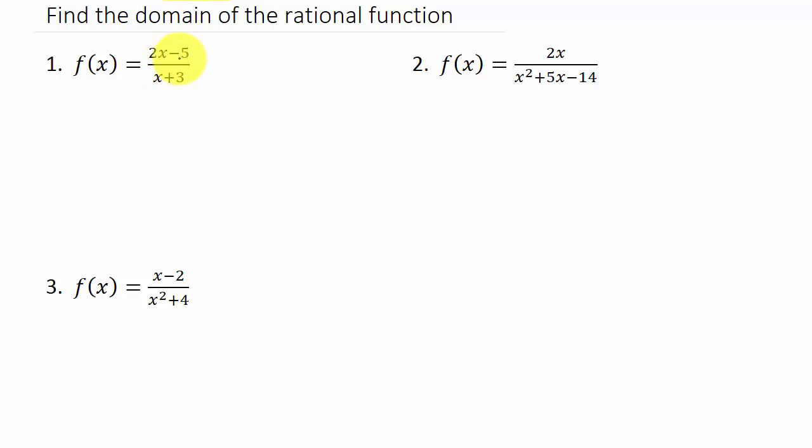We have 2x minus 5 over x plus 3. What do we know about fractions? We know that we can't have 0 in the denominator.